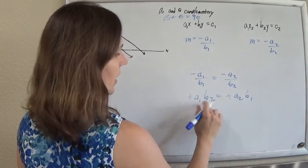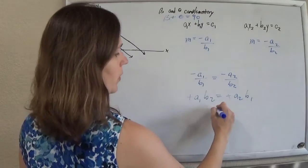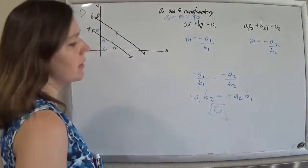Cancel out the negatives. a1 over b2 equals a2 over b1, and that's answer choice D. Yay!